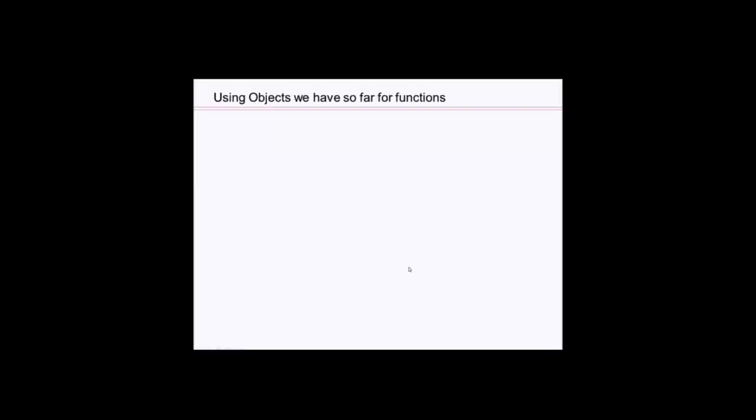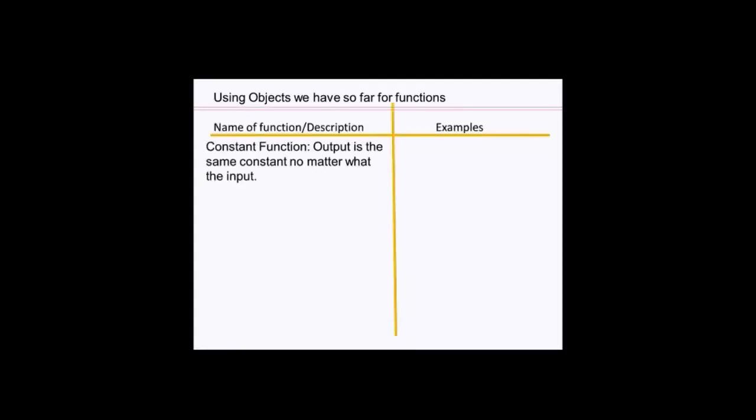So using objects we have so far developed in module one as functions, then we'll call it specific names. So here are some examples. A constant function. Output is constant no matter what the input is. So for example, if I write f(x) equals 5, then that's a constant function. f(0) would be 5, f(100) would be 5. No matter what the input is for x, the output is always 5. So f(2/3) would be 5, f(100) would be 5, f(negative 3,456) would also be 5. So here's an example of a constant function.